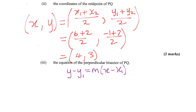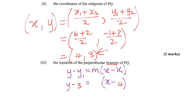To use this equation we need the coordinates of a point on the line and the gradient of the line. We know a point on the line because if it's a perpendicular bisector it passes through the midpoint of PQ, which is (4, 3). So y1 is 3 and x1 is 4. The trick is: what do we put for m?